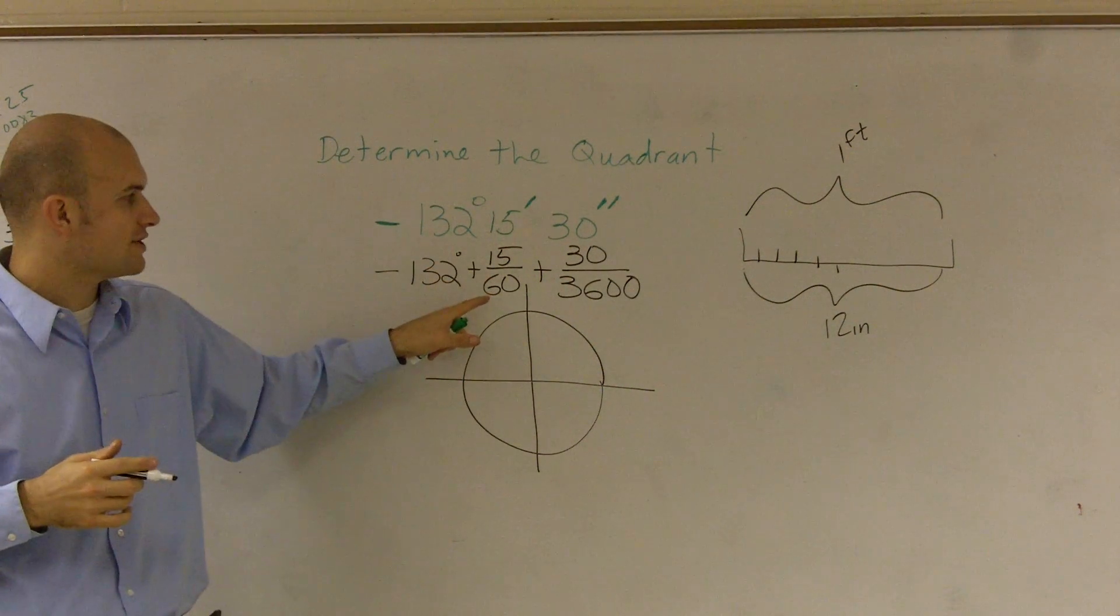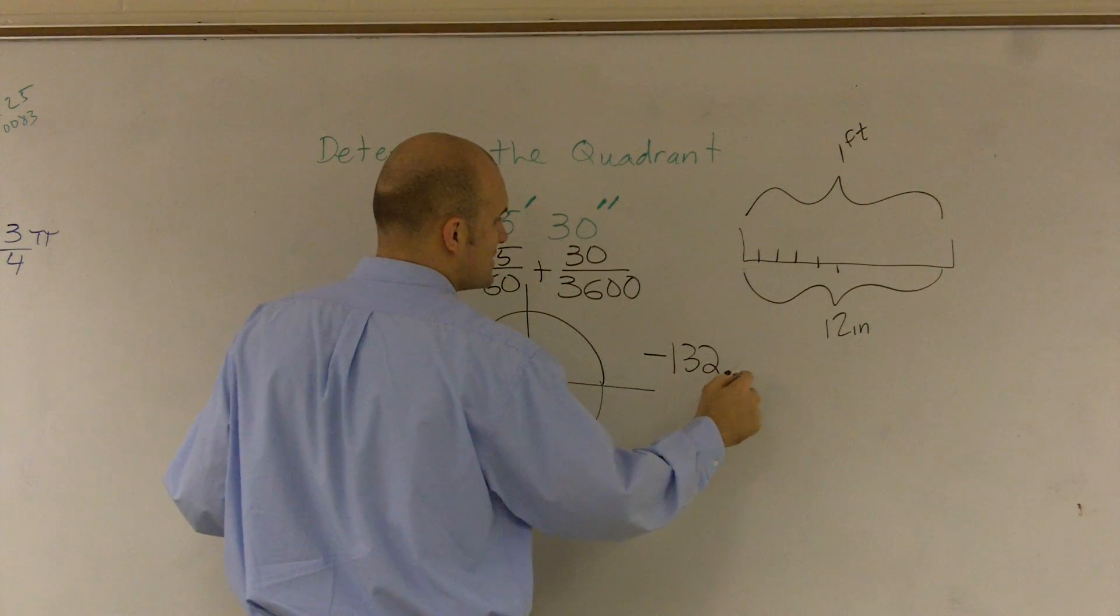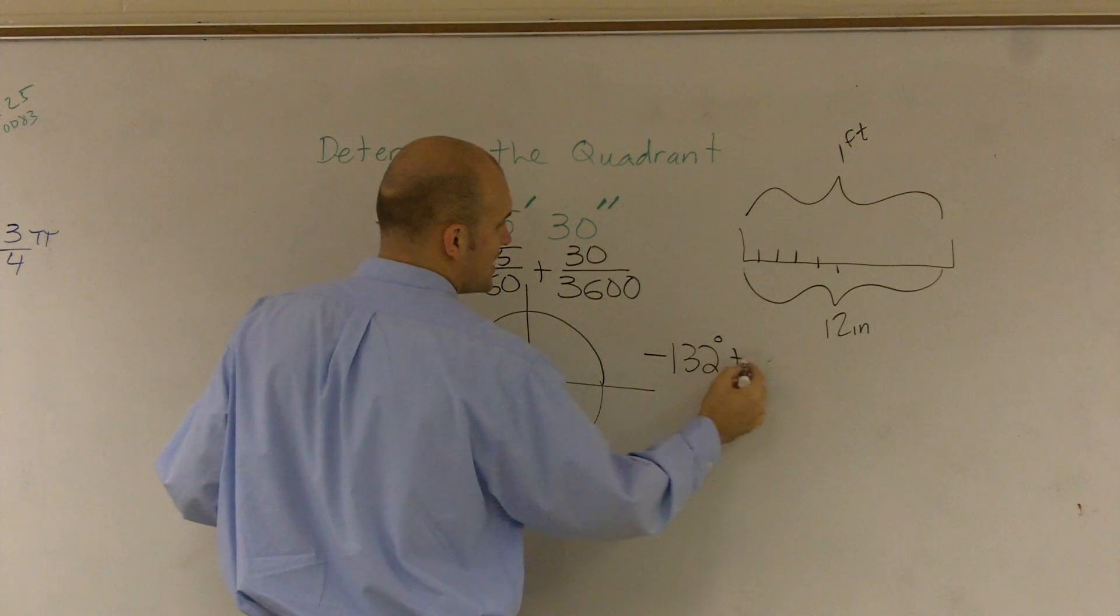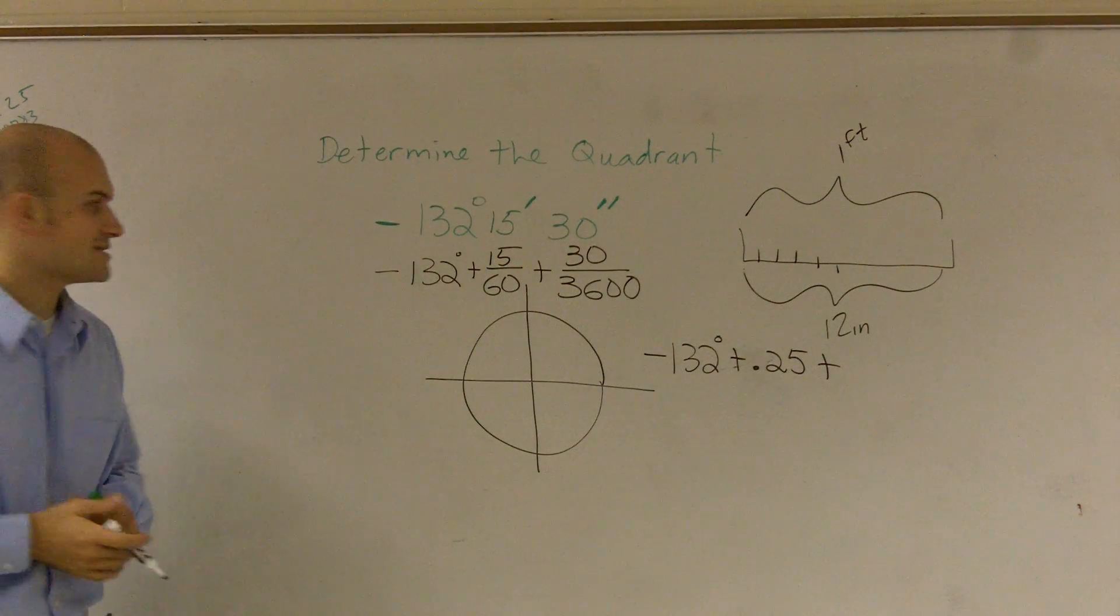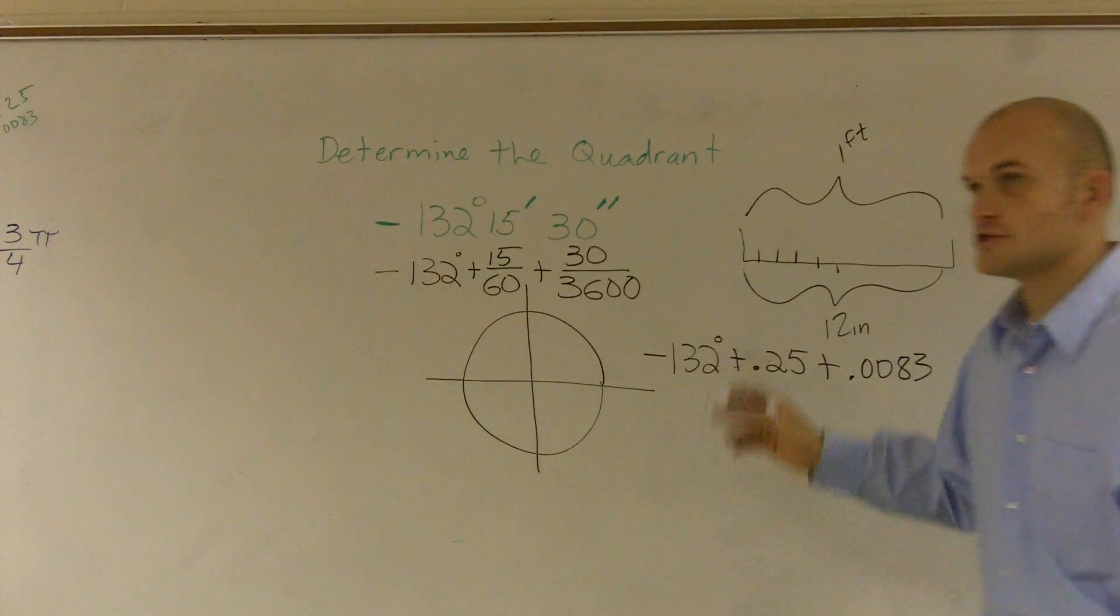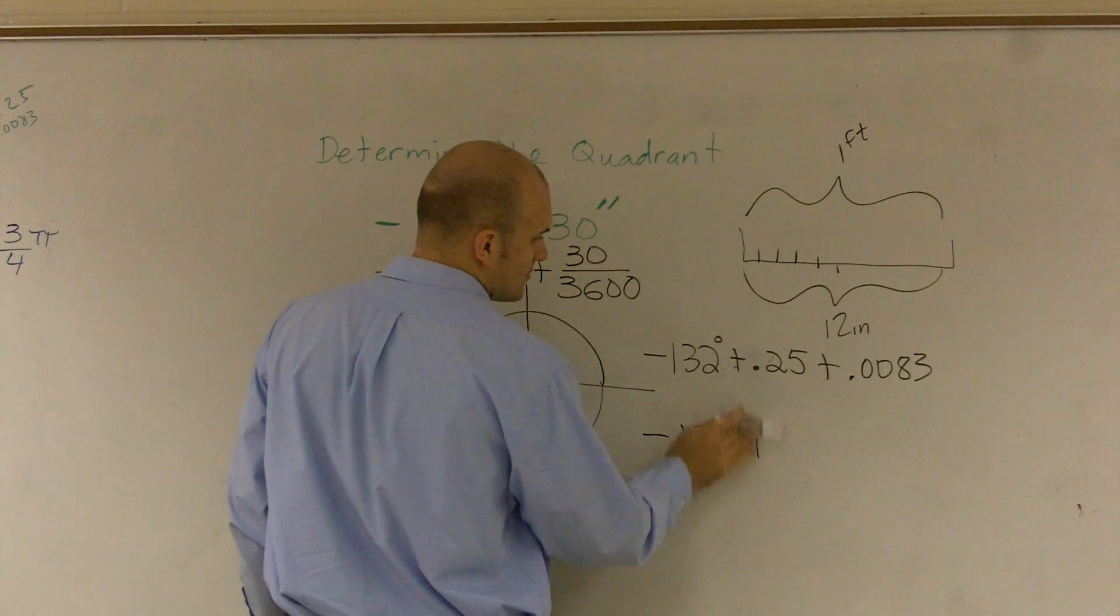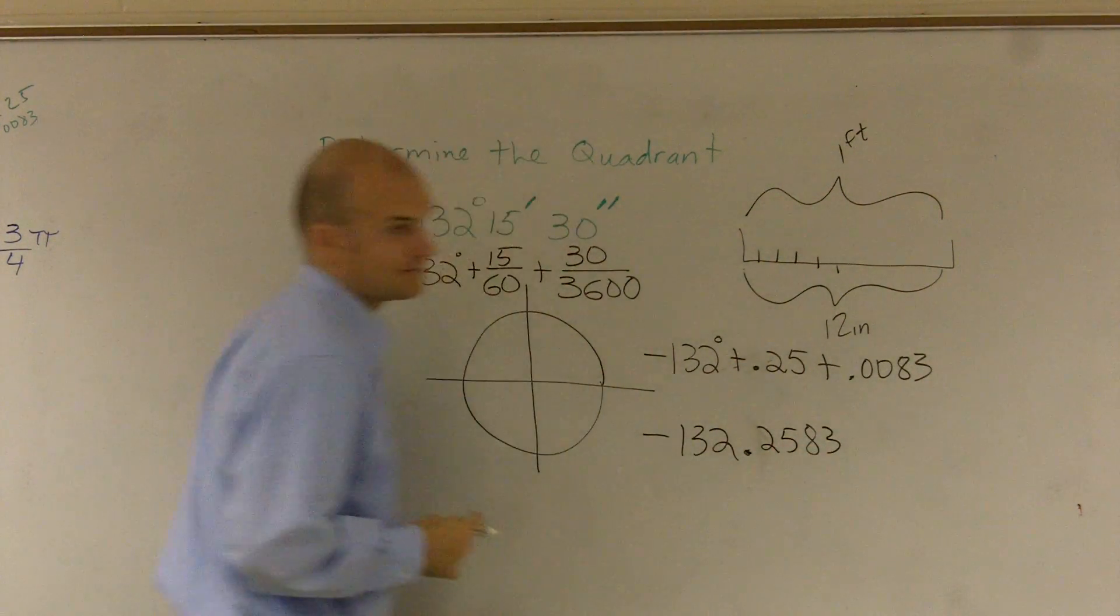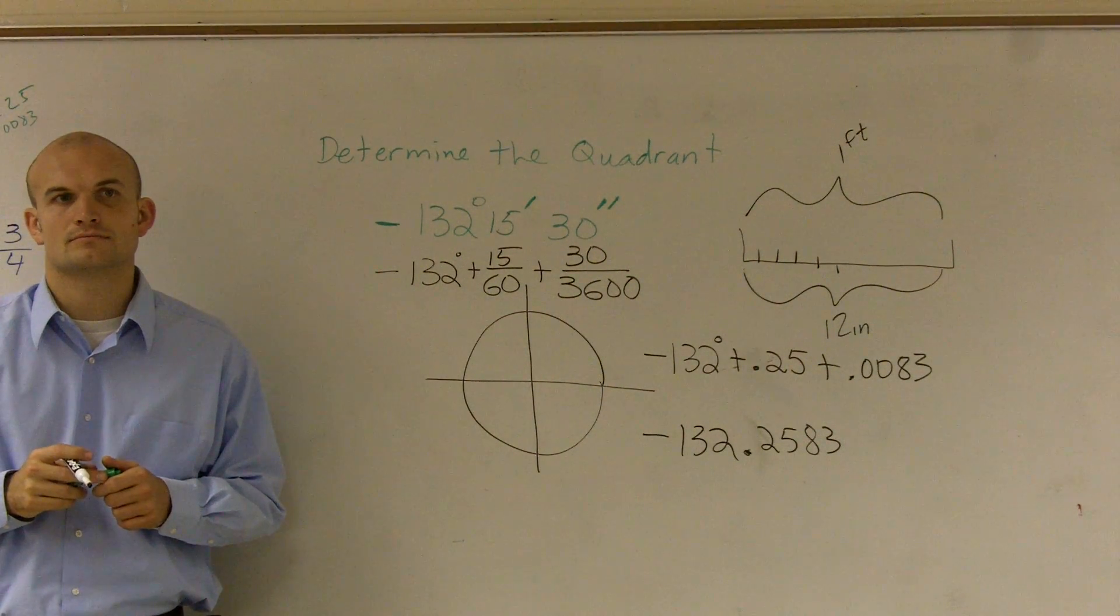So when I do 15 over 60, I get 0.25. So this would be negative 132.25. Let me do it this way: negative 132 plus 0.25 plus, and I do 30 over 3,600, and I get 0.0083. So when I add these up, my decimal approximation is negative 132.2583.